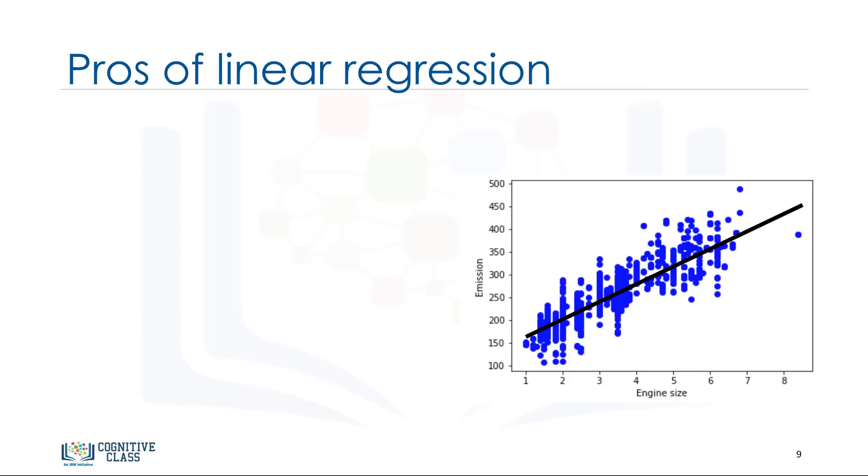Let's talk a bit about why linear regression is so useful. Quite simply, it is the most basic regression to use and understand. In fact, one reason why linear regression is so useful is that it's fast. It also doesn't require tuning of parameters. So, something like tuning the k parameter in k nearest neighbors or the learning rate in neural networks isn't something to worry about. Linear regression is also easy to understand and highly interpretable.